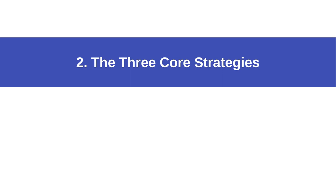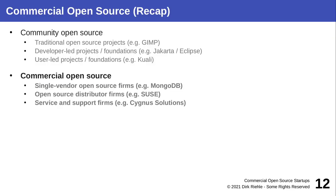If the revenue streams and what customers pay for aren't so surprising, what is novel about open source? We need to distinguish between community open source, where there is a broad array of stakeholders who share in the ownership, and commercial open source, where there is unique intellectual property owned by the vendor and the vendor only. That is ultimately what they derive their revenues from.